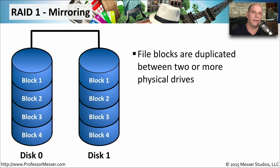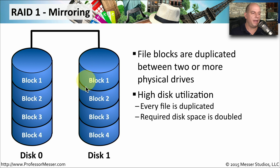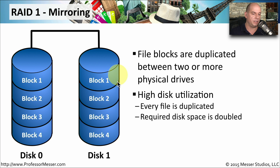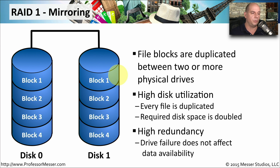Another RAID type to consider is RAID 1, also called mirroring, because we create an exact duplicate of your data. We need at least two physical drives. Instead of splitting information between drives, we put an exact duplicate across them. This means you're using twice as much drive space, since you're storing the information twice across separate physical drives. Every file and every bit of information is duplicated across both physical disks, which means you are absolutely redundant. If you lose any one drive, the other has an exact duplicate of the information.